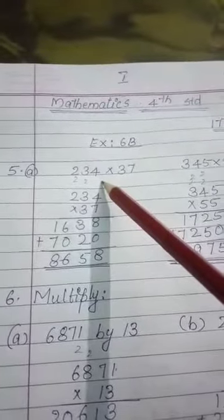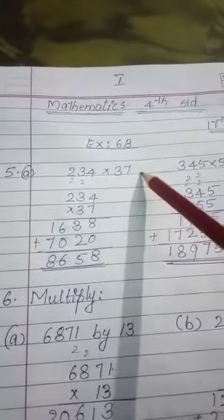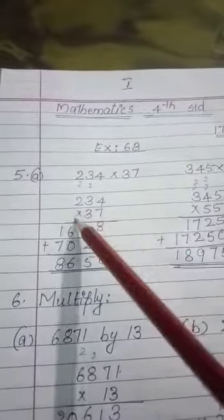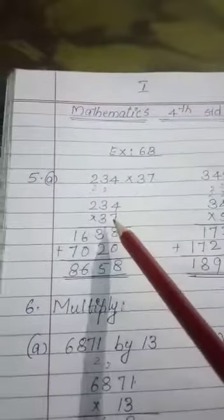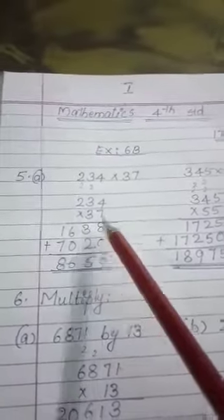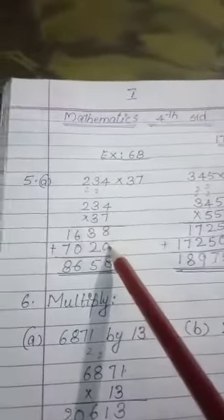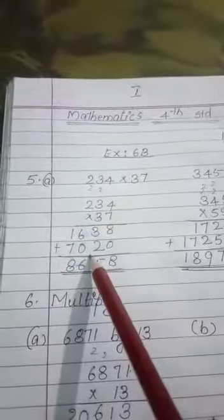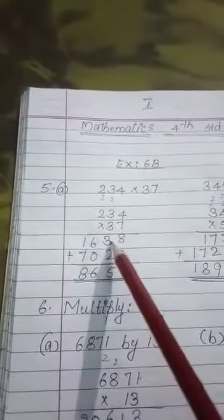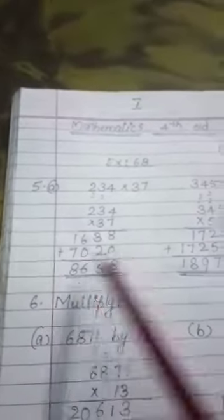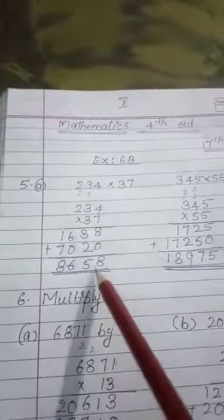The 5th question given here is 234 multiplied by 37. We write 234 multiplied by 37 and multiply 7 with 234. You will get 1638, and 3 is in the 10th space, so put 0 in the first space. When you multiply 234 with 3, you will get 7020. Next, add these two numbers: 1638 plus 7020. You will get 8658.